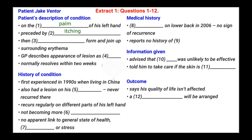The next question is: then blank form and join up. The patient says that he gets blisters that join up and form into one big one. So the answer to number three is: then blisters form and join up.